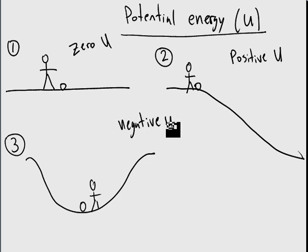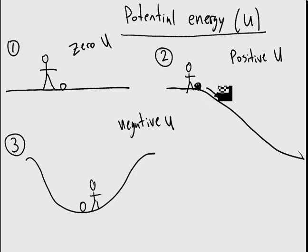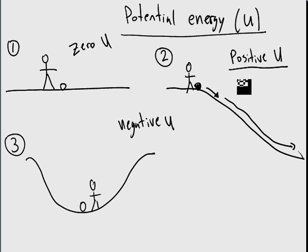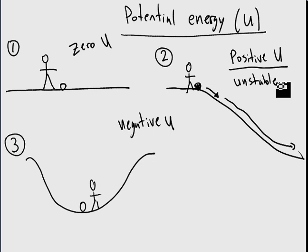In number two, positive potential energy — this is the thing that's kind of most familiar to us with gravity. Just because of where this ball is, it will kind of take care of itself. It has energy already stored up. So if I just give it a little tiny tap, it will go all the way down on its own, and it will end up going faster than how fast I kicked it. So here, I would say it's extra unstable. The ball is unstable because if I just give it a little tap, it will go all the way down the hill.